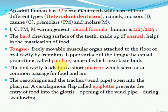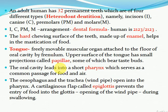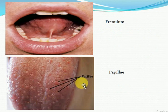The hard covering of our teeth — the hard surface — is made of enamel. Being hard, it helps in mastication or breakdown of food. The tongue is a freely movable muscular organ attached to the oral cavity by the frenulum. The upper surface of the tongue has small projections called papillae, some of which bear taste buds.